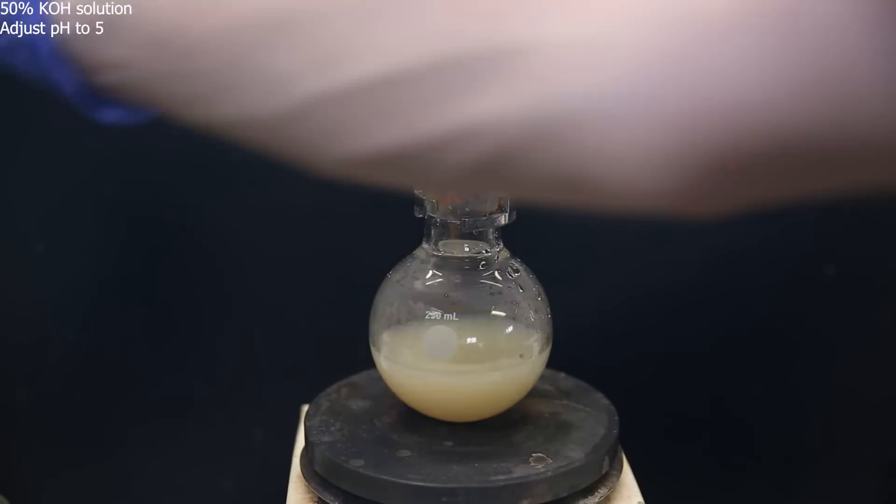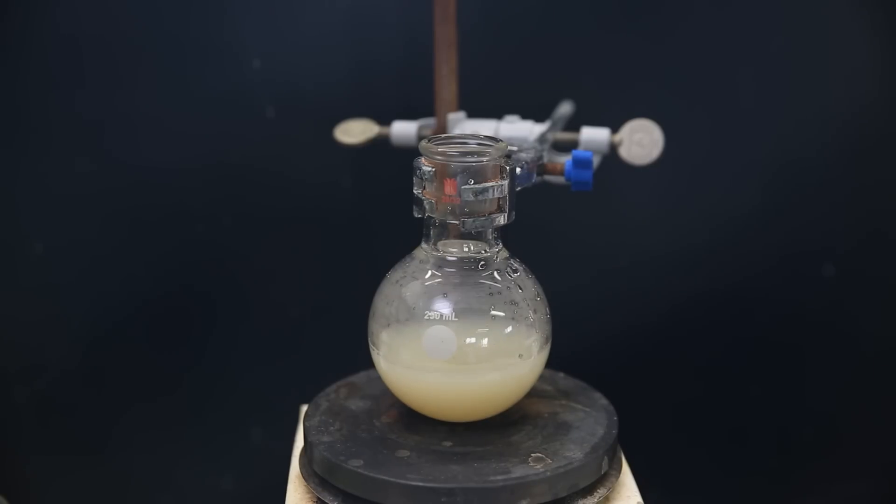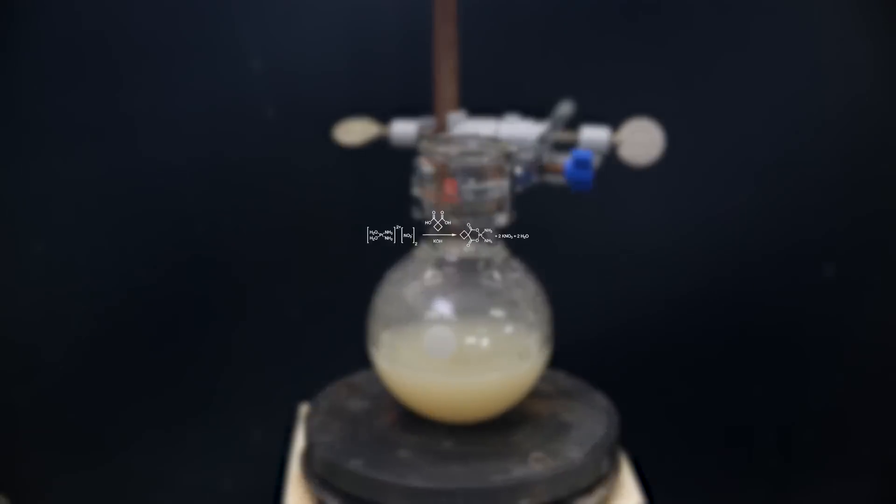Each time I add the potassium hydroxide, a dark precipitate forms that redissolves immediately afterward. After a while, the pH is correct, and it has become a bit milky, and I leave it to stir for 3 hours.